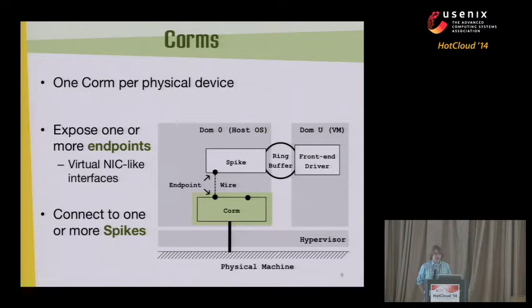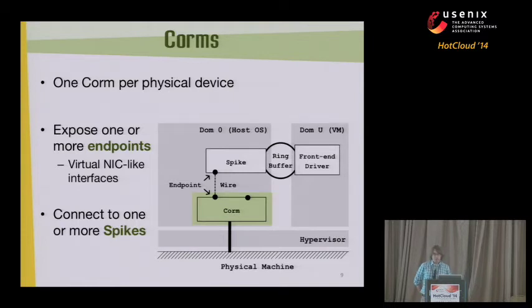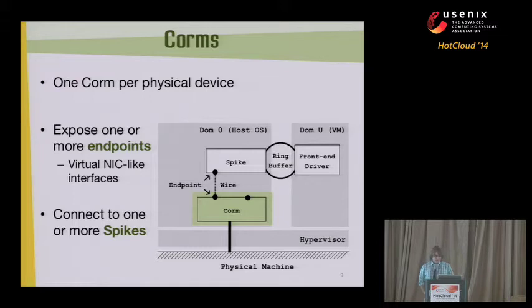To describe what QORMs are in our system: think of them as the underground piece. The QORMs are attached to the physical device - the QORM wraps the hardware driver. QORMs expose one or more endpoints, which are basically interfaces into the hardware driver that look very much like virtual network interface cards. The endpoints on the QORM can be connected to one or more spikes.